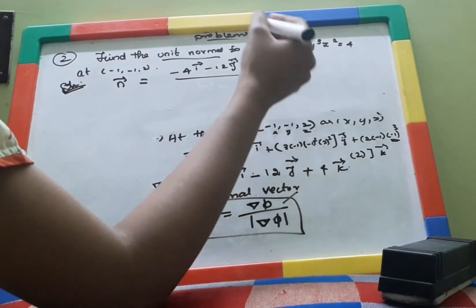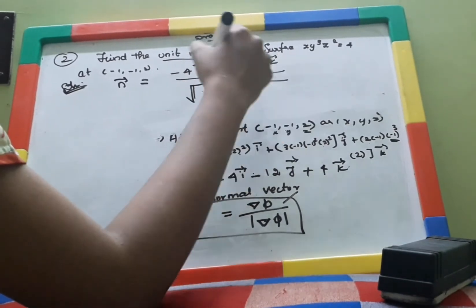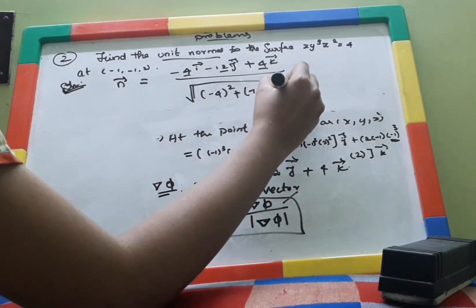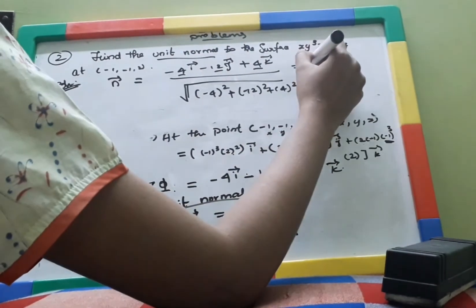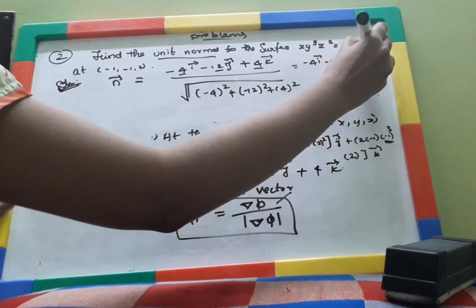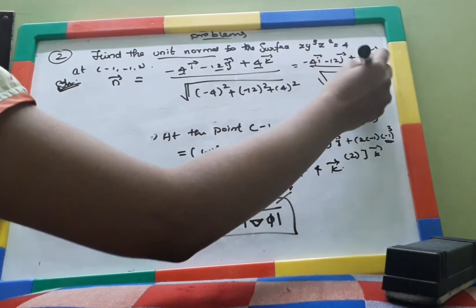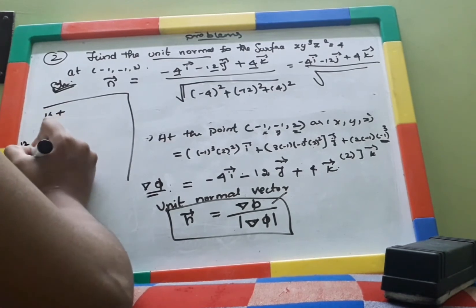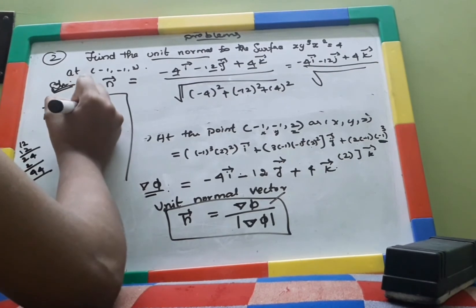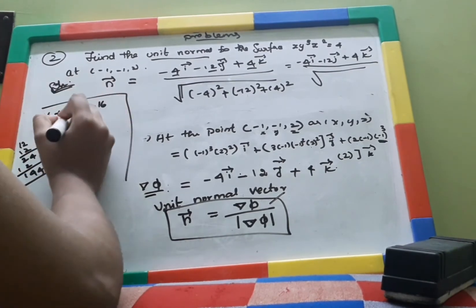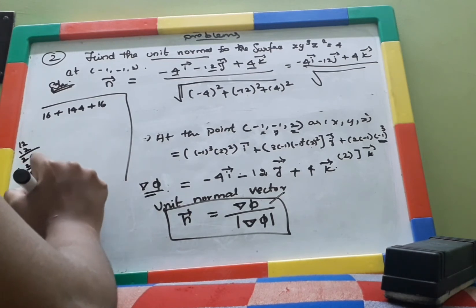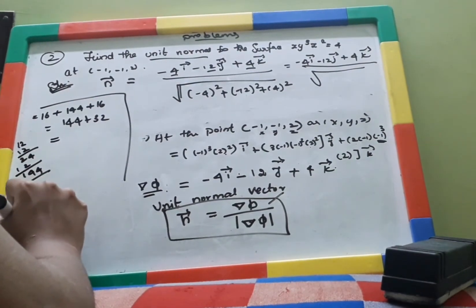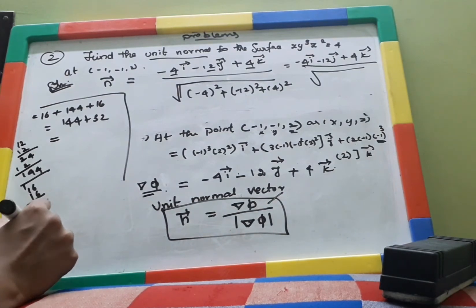To find the modulus, we use √(x² + y² + z²). So |del ψ| = √((−4)² + (−12)² + 4²) = √(16 + 144 + 16) = √176.